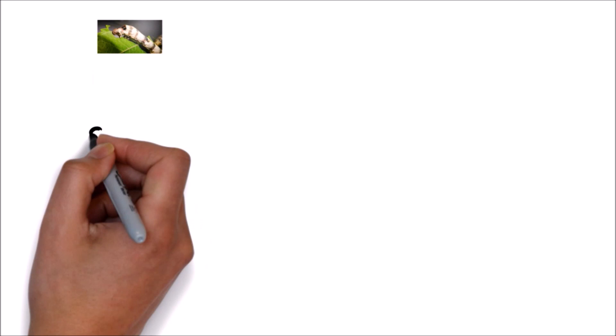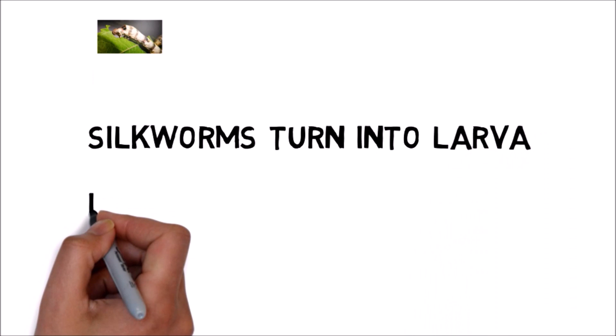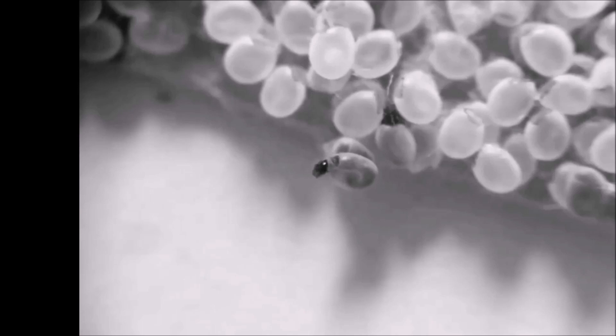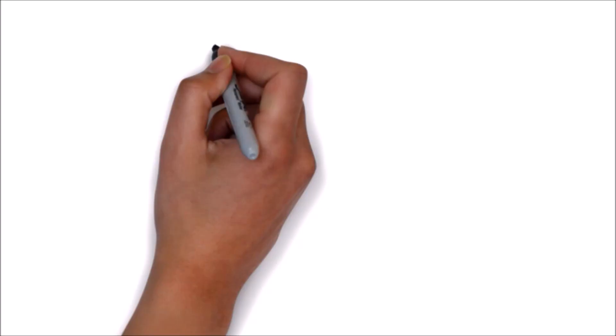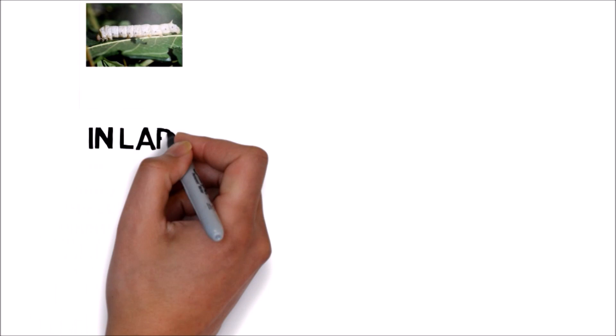Egg hatches into larvae in 10 to 12 days. In larval stage, a silkworm passes through five instars or five different stages.